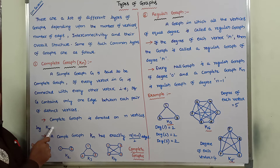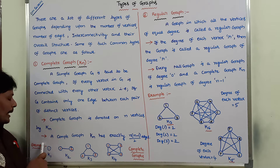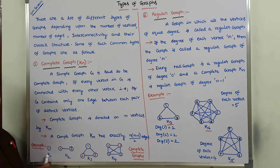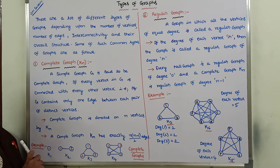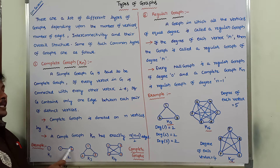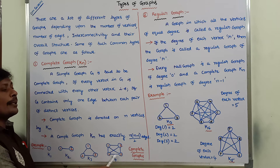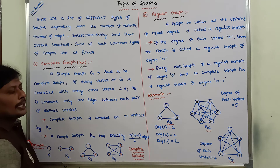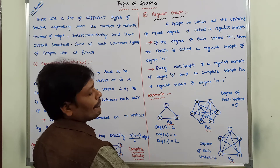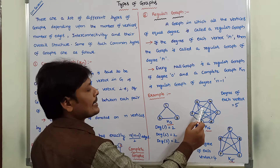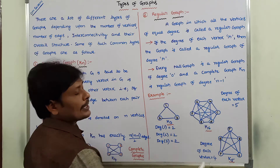A complete graph with n vertices is denoted by K suffix n, where n is the number of vertices. So K1 means a complete graph with 1 vertex, K2 with 2 vertices, K3 with 3 vertices, K4 with 4 vertices. This is K5 — a complete graph with 5 vertices — and this is K6 — a complete graph with 6 vertices.